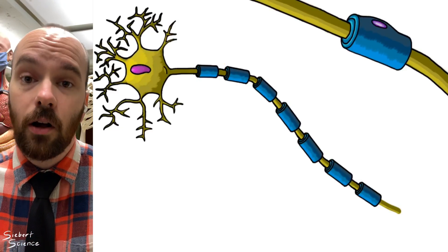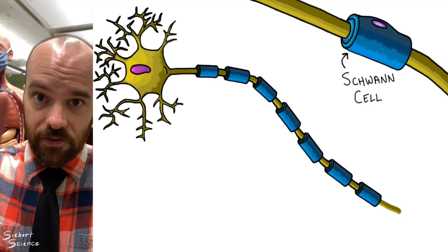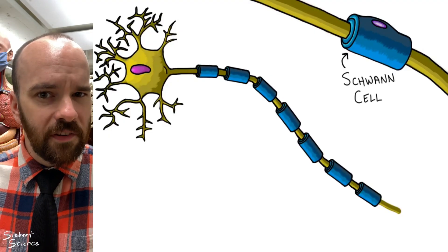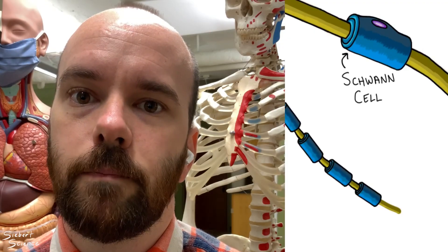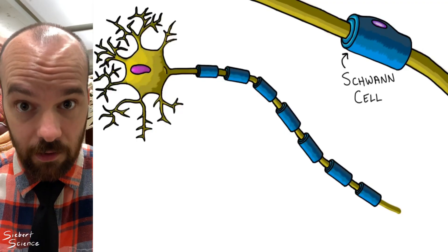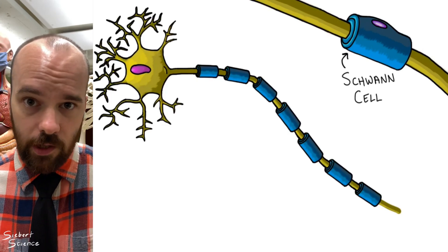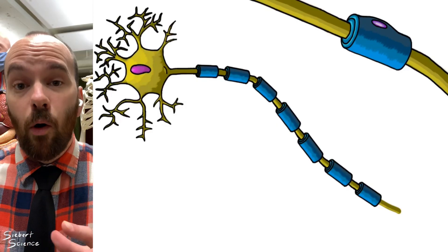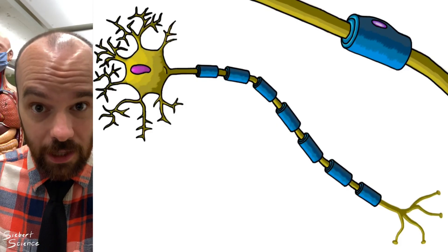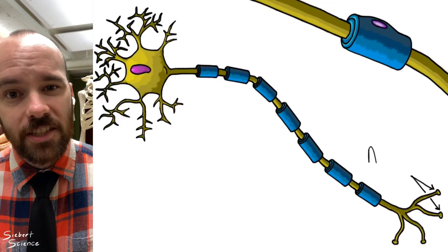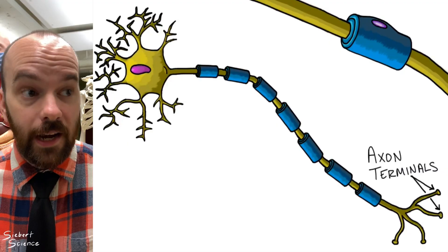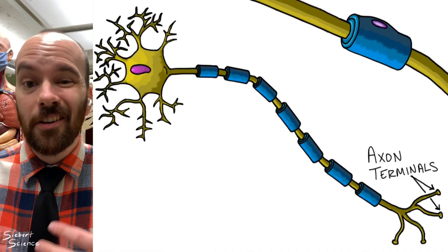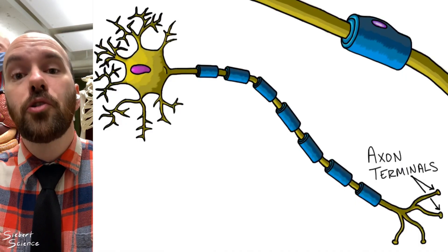The particular myelin sheath cell shown in this diagram is called a Schwann cell. A Schwann cell is a single cell that wraps around and insulates the axon. There's another type of cell called an oligodendrocyte — for now just know that a Schwann cell is a type of myelin sheath that speeds up the action potential. Once the signal reaches the very end, or distal end, of the axon, it reaches what we call an axon terminal.